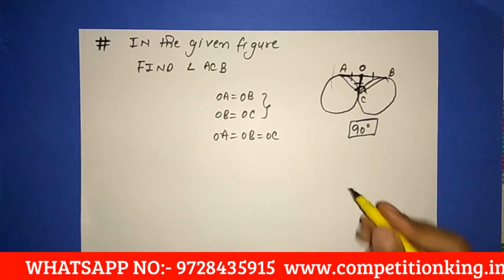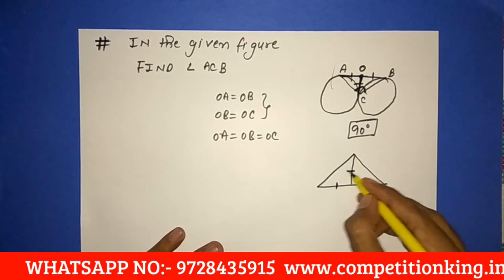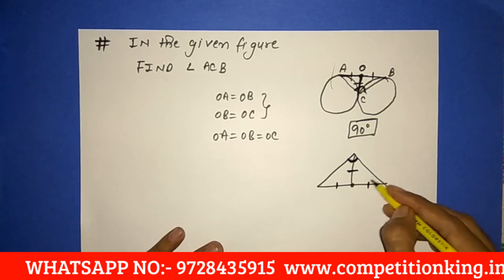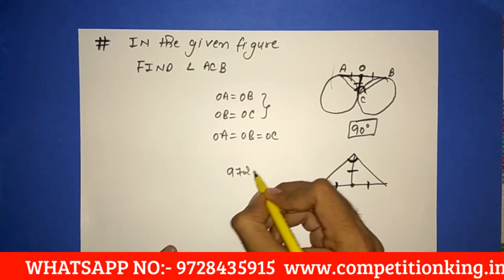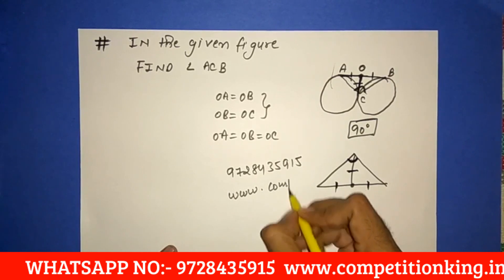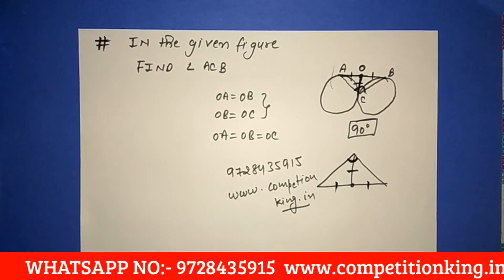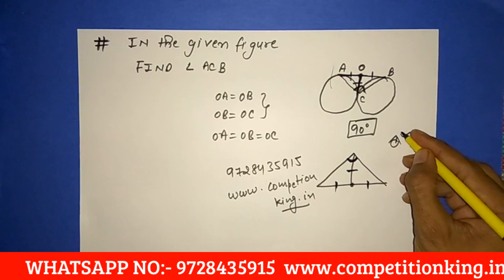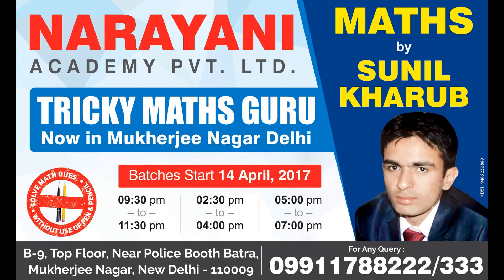Many more questions are there, but you have to keep only one thing in mind: if these three parts are all equal, this angle is always 90 degrees. Or if this angle is 90 degrees and this is the center, then all three are equal. Thank you. For more tricks like this, you can WhatsApp us on 9728435955 or visit our website www.competitionking.in.